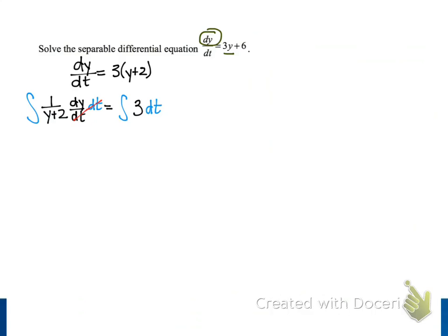When we evaluate that integral on the left side, we get the natural log of the absolute value of y plus 2. And on the right side, we get 3t plus some unknown constant c1. I call this constant c1 because I know we're going to modify it as we solve this before we're done with our problem, and so we'll change the name of an unknown constant as we go along.